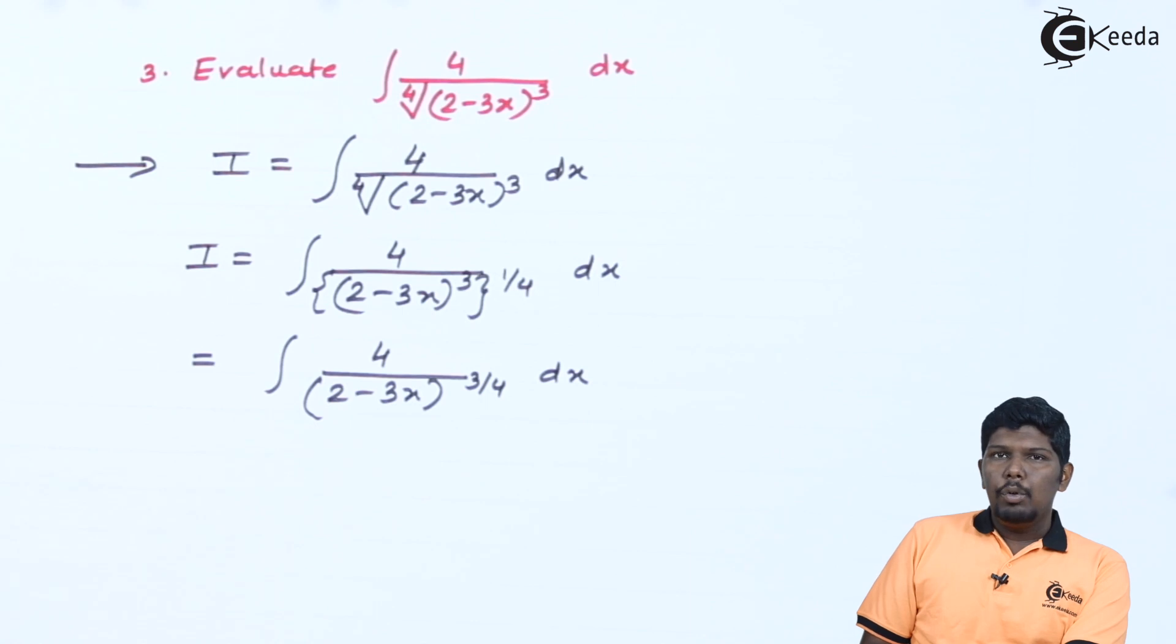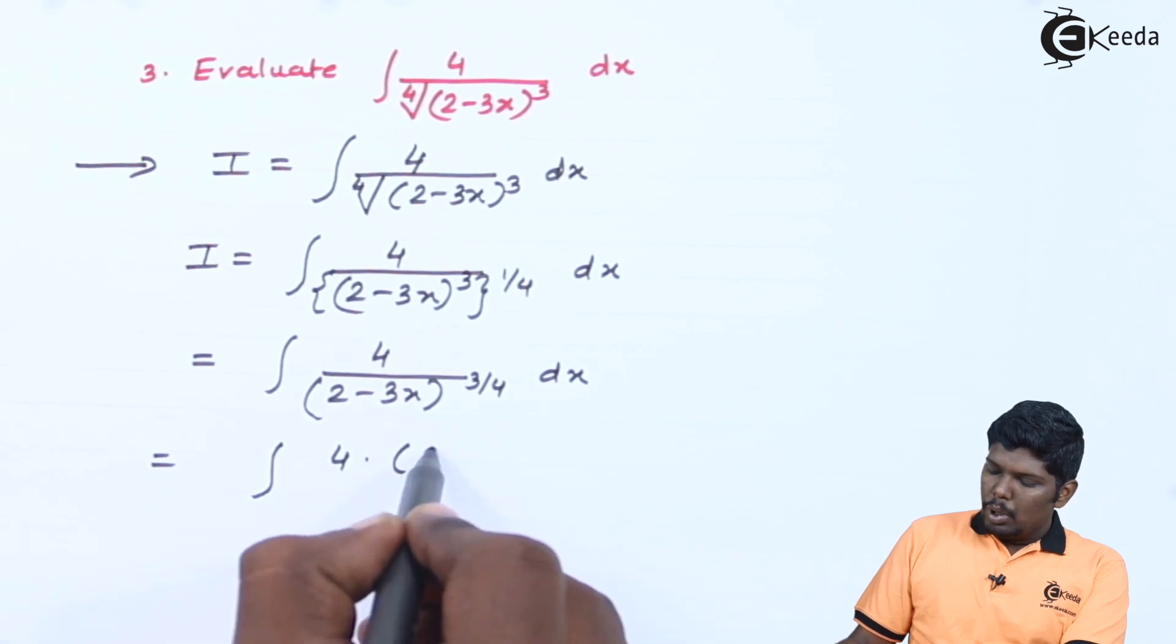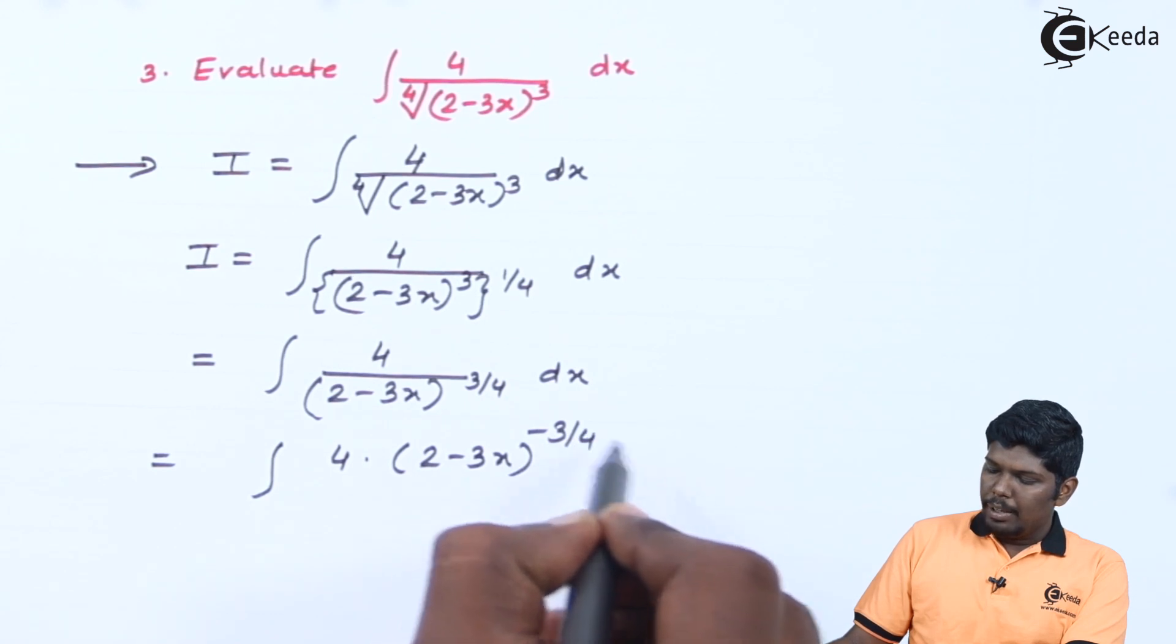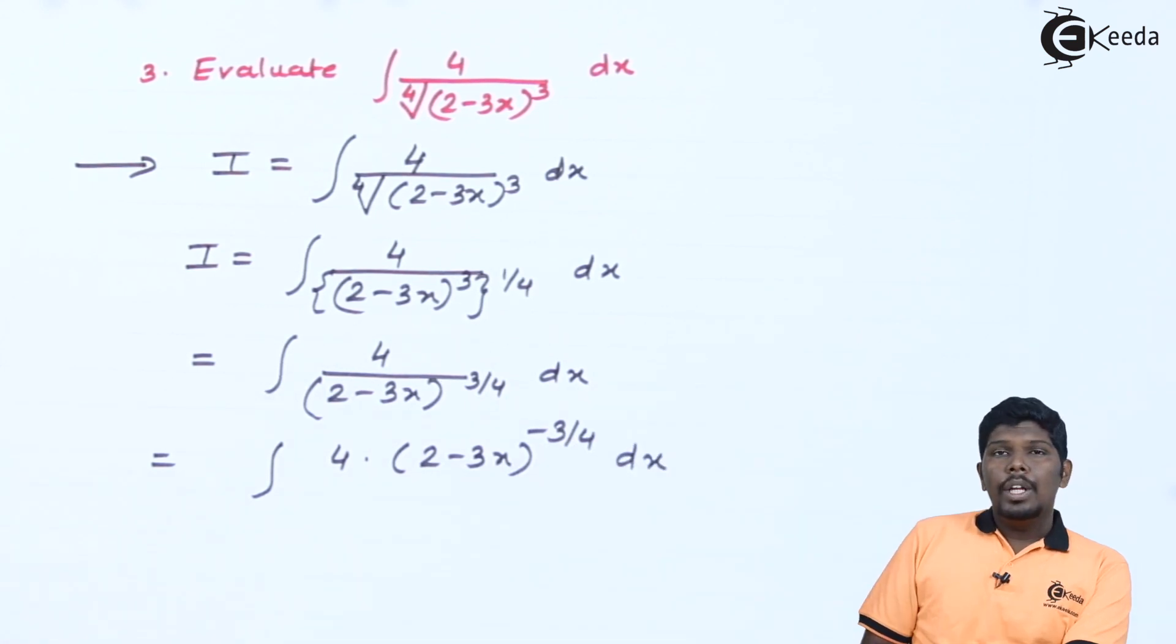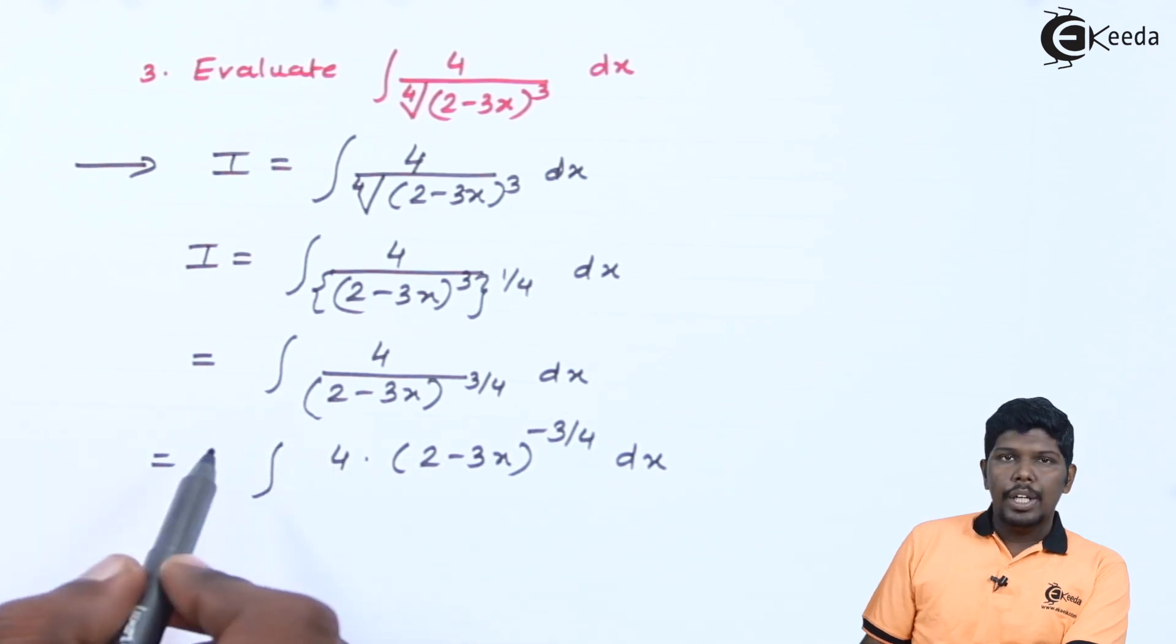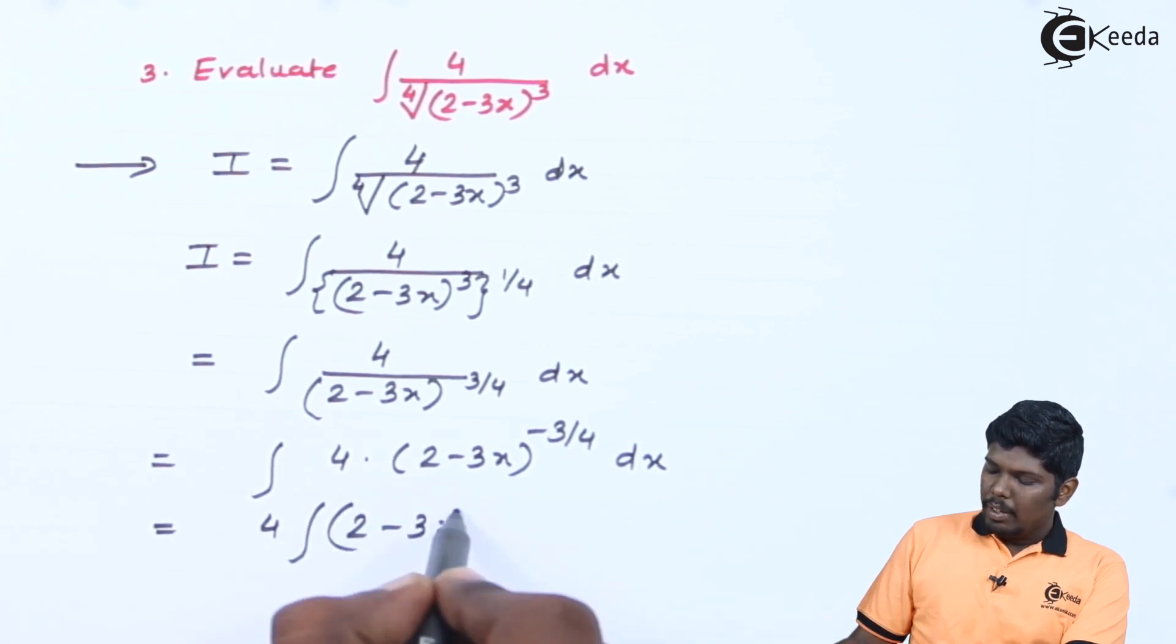Now further if you see, if I take this part in the numerator, I can get a type which I can compare with x raised to n. This will give you 4 times (2-3x) - the positive power will become negative power in the numerator - dx. Now the next rule says that we have a constant which is getting multiplied. We can take it outside the integral. That will give you 4 times integral (2-3x) raised to -3/4 dx.